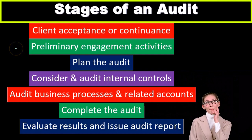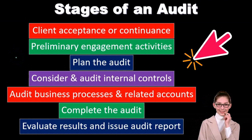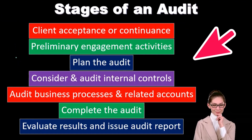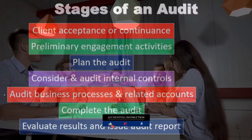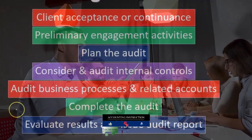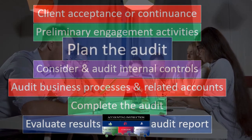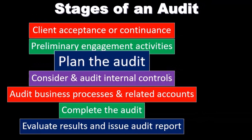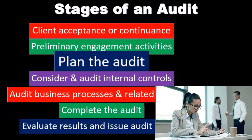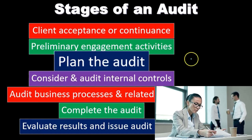We have the audit broken out into stages. We had the client acceptance or continuance, the preliminary engagement activities, the planning of the audit, then we consider the audit internal controls, then we go through the audit business process and related accounts — those substantive tests. Then we complete the audit, and finally evaluate results and issue the audit report. We're focusing mainly on the evaluation of materiality at the beginning of the audit, which gives us an idea of materiality levels to better plan and execute the audit.